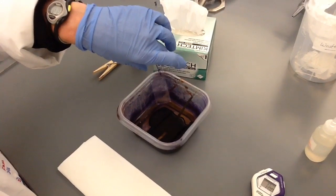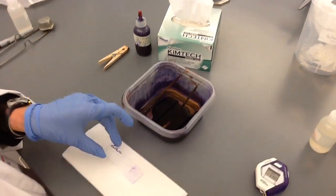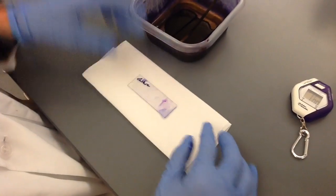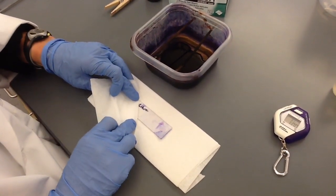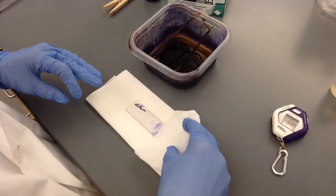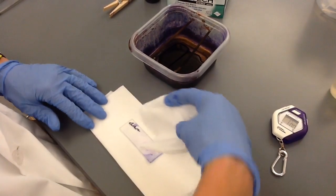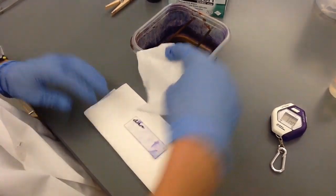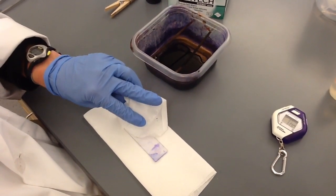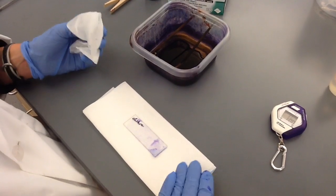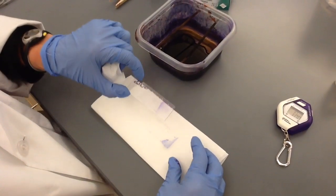You've now got a stained but wet slide. Set it down on a paper towel. And you can very gently wick and blot with a Kim Wipe. You don't want to rub the Kim Wipe because then you'll rub your stained cells off.